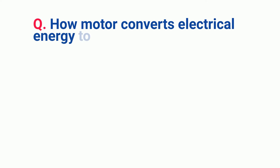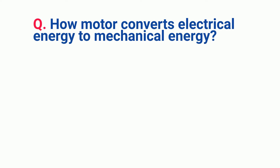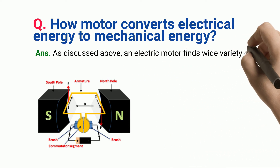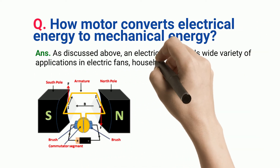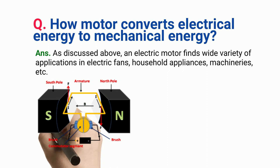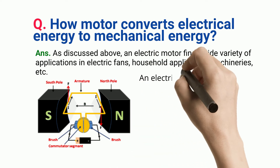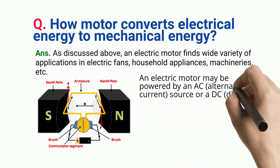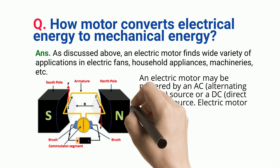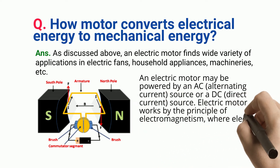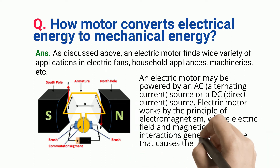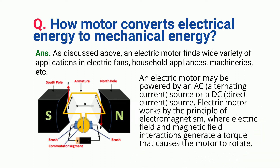How a Motor Converts Electrical Energy to Mechanical Energy. An electric motor finds a wide variety of applications in electric fans, household appliances, machineries, etc. An electric motor may be powered by an AC alternating current source or a DC direct current source. An electric motor works by the principle of electromagnetism, where electric field and magnetic field interactions generate a torque that causes the motor to rotate.